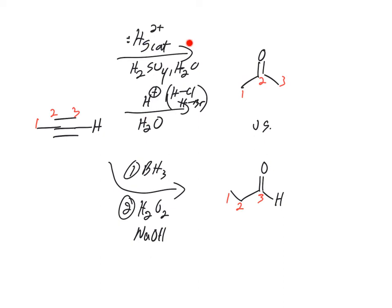Different mechanisms. This one involves a three-membered ring. This one involves carbocations. This one doesn't, but it still gets you to the same ketone. So those are the two ways to make a ketone from a terminal alkyne. And here's the one way to make an aldehyde from a terminal alkyne.